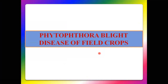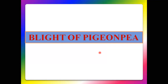In today's lecture, we will discuss about Phytophthora Blight Disease seen in field crops. First, we discuss about Blight Disease seen in Pigeon Pea. The first occurrence of Phytophthora Blight on Pigeon Pea crops in India was reported by Willems et al. in 1966 at Indian Agricultural Research Station, New Delhi.